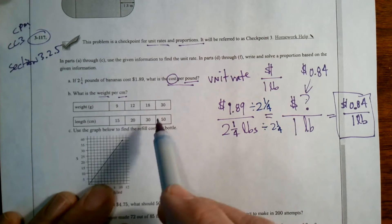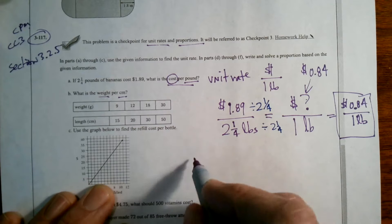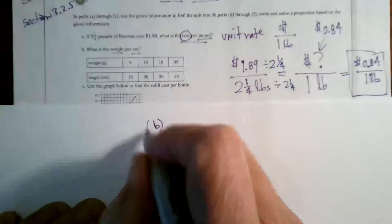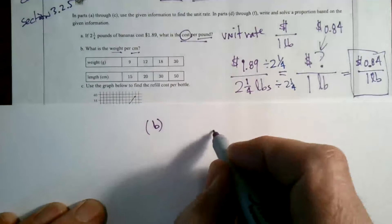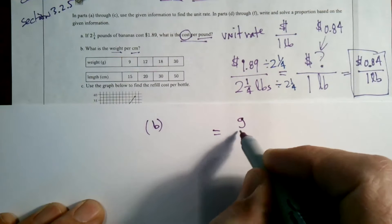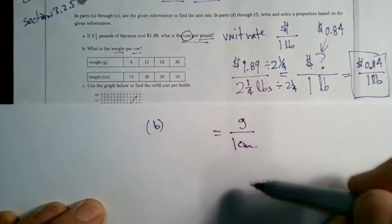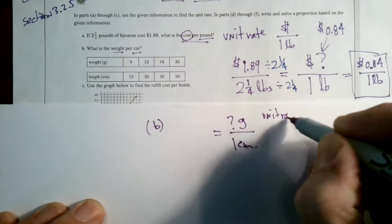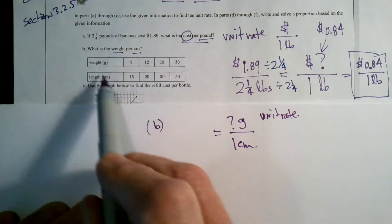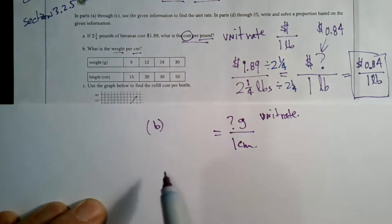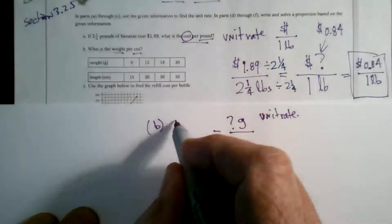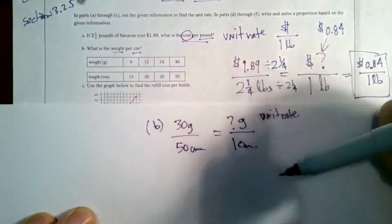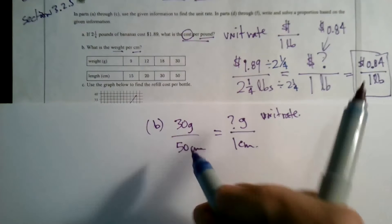For part B, let's use the 50 and the 30. I'm looking for grams per one centimeter — that's my unit rate. I'll set up one of these data points: 30 grams for every 50 centimeters. So I have a ratio here. How do I convert that ratio to a unit rate?